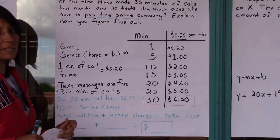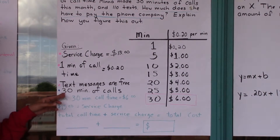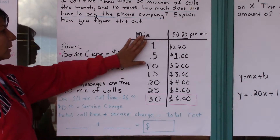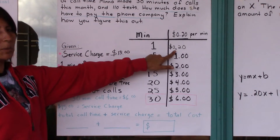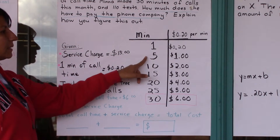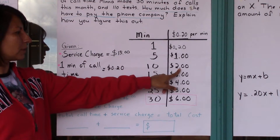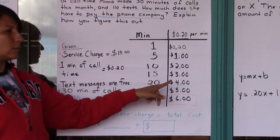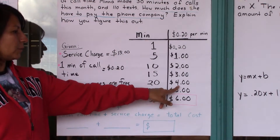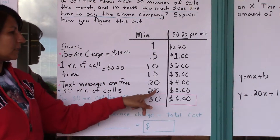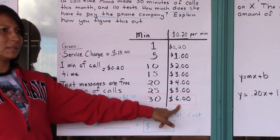We will use a T-chart to find out how much the 30 minutes of calls costs. So at one minute it equals $0.20. Five minutes equals $1.00. Ten minutes equals $2.00. Fifteen minutes equals $3.00. Twenty minutes equals $4.00. Twenty-five minutes equals $5.00. And thirty minutes equals $6.00.